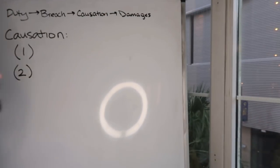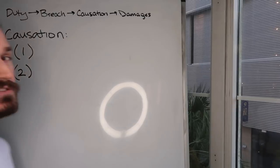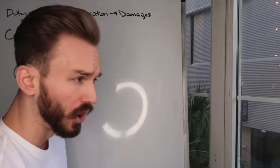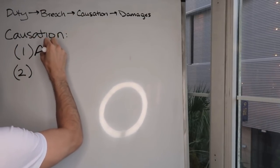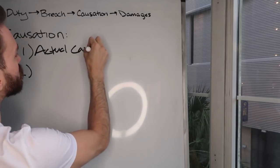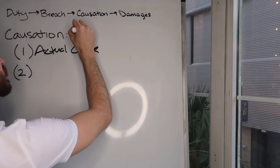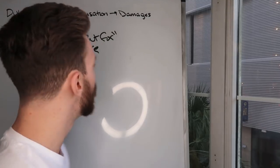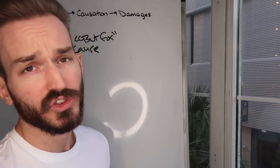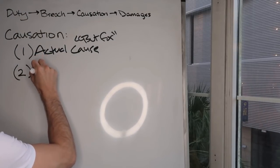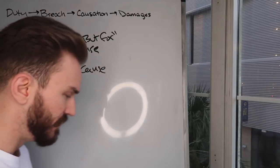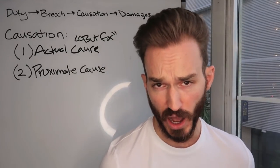Your causation analysis, similar to your duty analysis, is going to have two parts. Number one, you'll have to determine whether the defendant's breach of the duty of care owed was the actual cause of the plaintiff's harm — sometimes called but-for causation. And secondly, you'll have to determine whether the defendant's breach was the proximate cause of the plaintiff's harm. If you have both actual cause and proximate cause, the element of causation is satisfied.